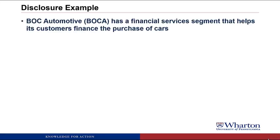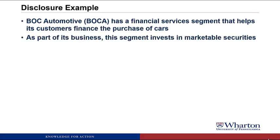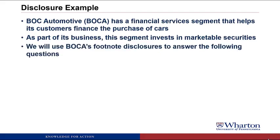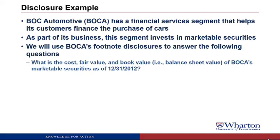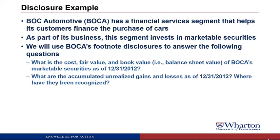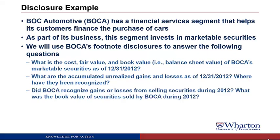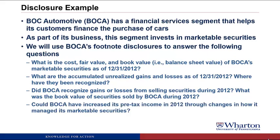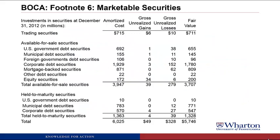In our disclosure example, we're going to be looking at BOC Automotive, otherwise known as Boca. They have a financial services segment that helps its customers finance the purchase of their cars. As part of its business, that segment invests in marketable securities. We're going to use Boca's footnote disclosures to answer the following questions: What's the cost, fair value, and book value of Boca's marketable securities at the end of the year? What were any accumulated unrealized gains or losses as of December 31, 2012? Where have they been recognized? Did Boca recognize gains or losses from selling securities during 2012? What was the book value of the securities they sold? And could Boca have increased its pre-tax income in 2012 through changes in how it managed its marketable securities? Here is footnote 6 from Boca's annual report, which summarizes their marketable securities.